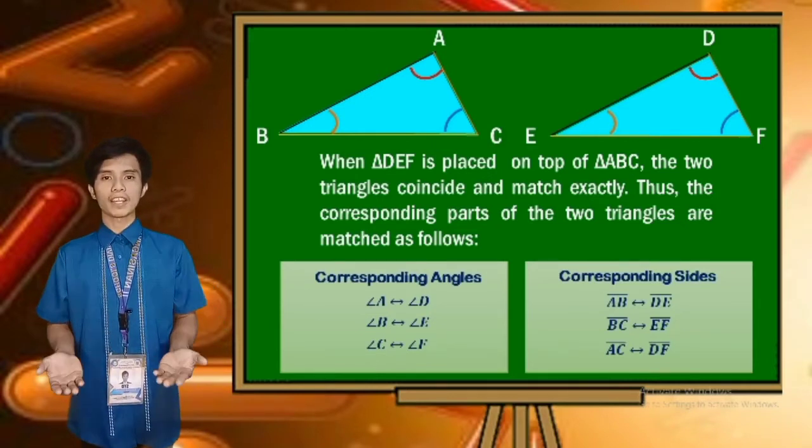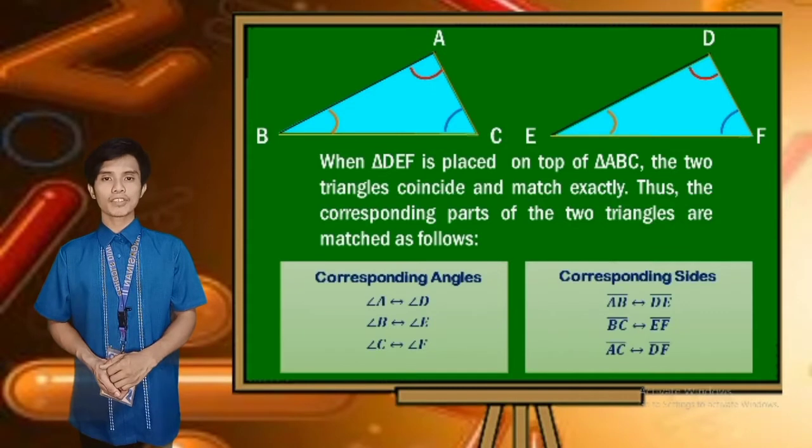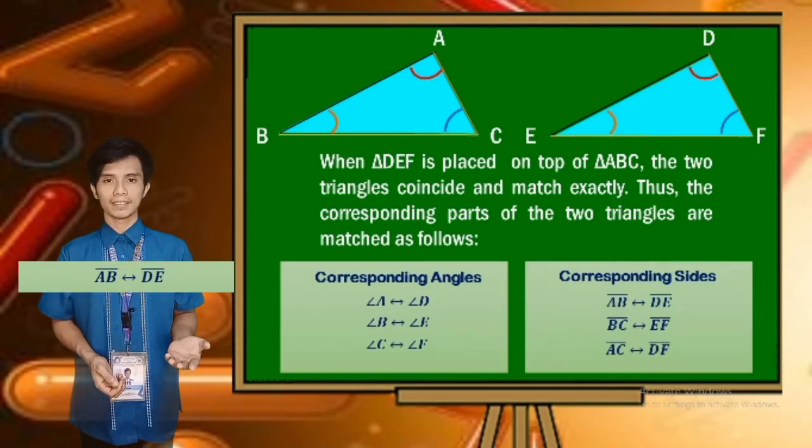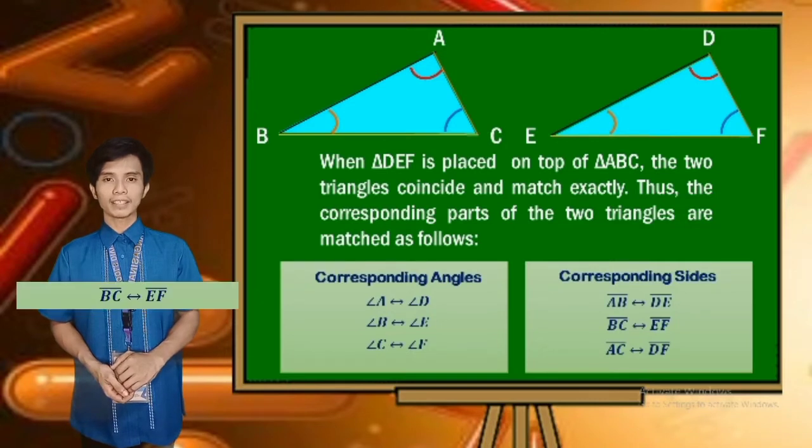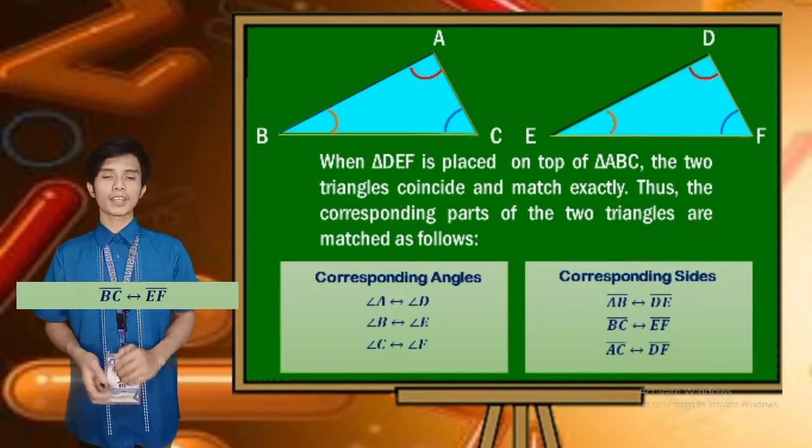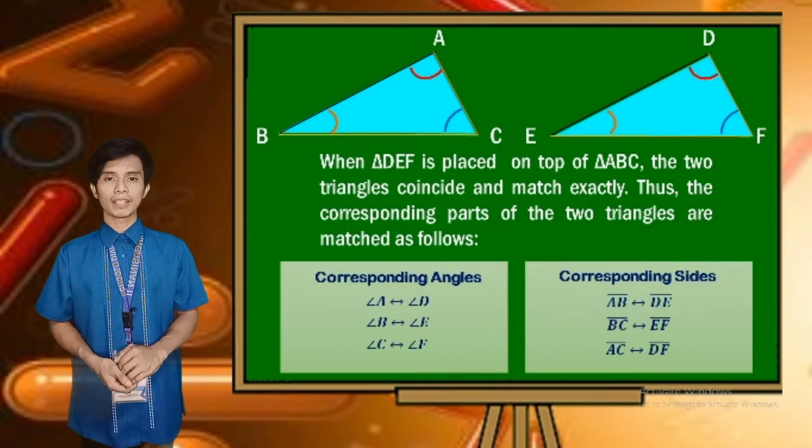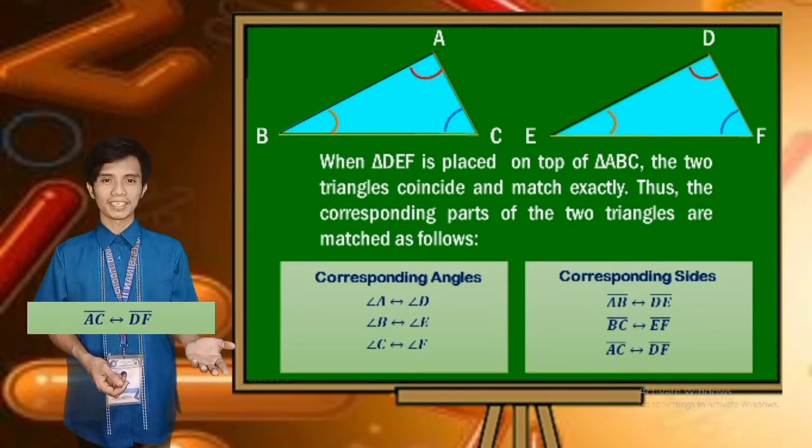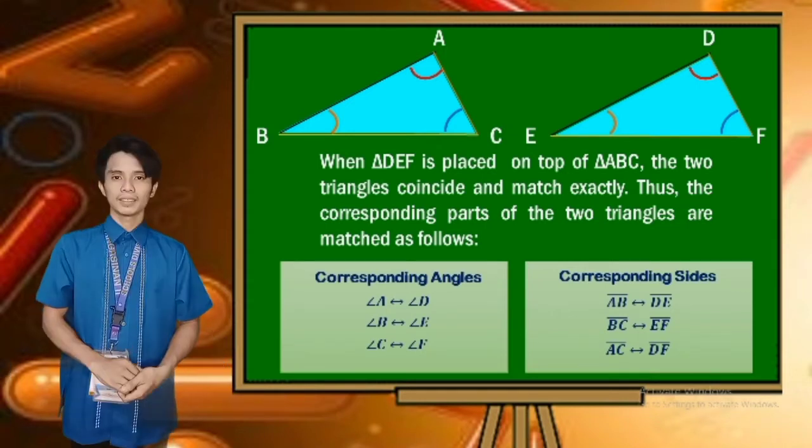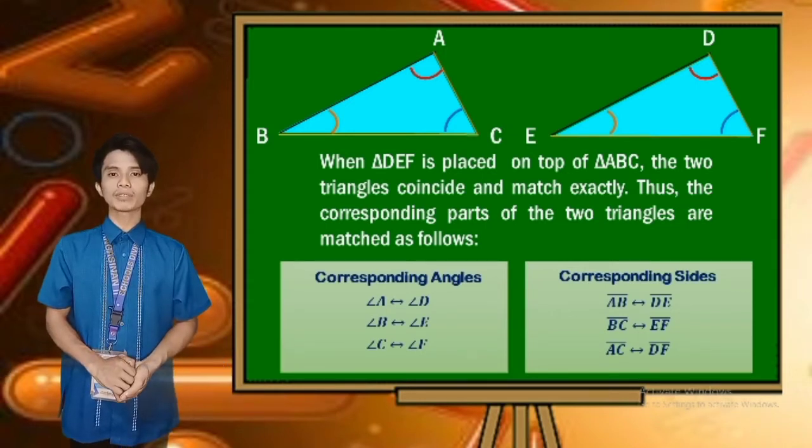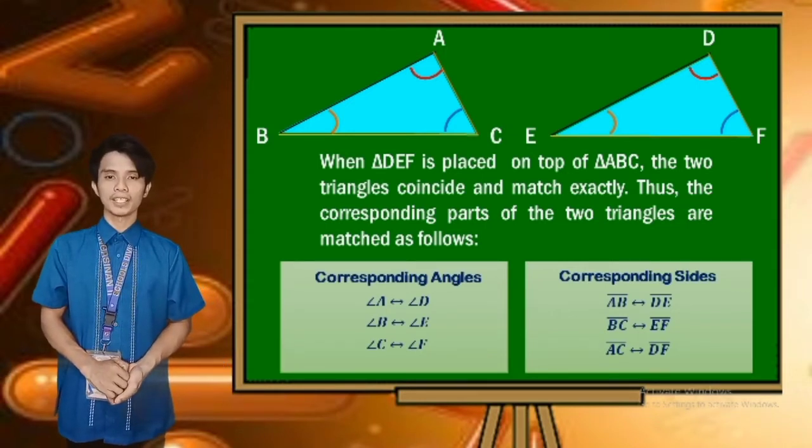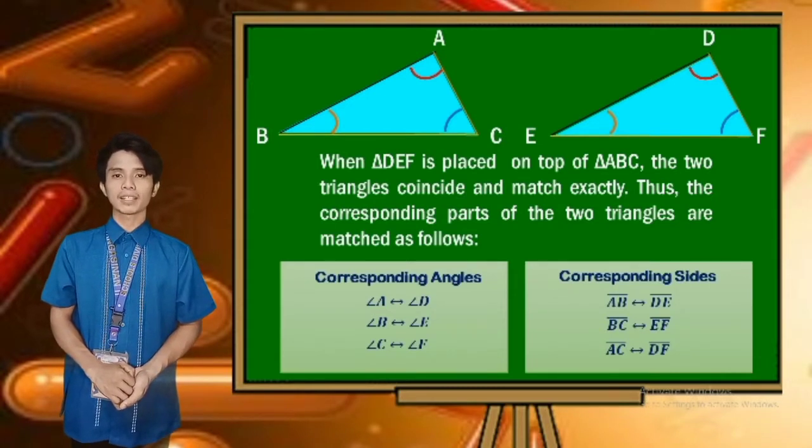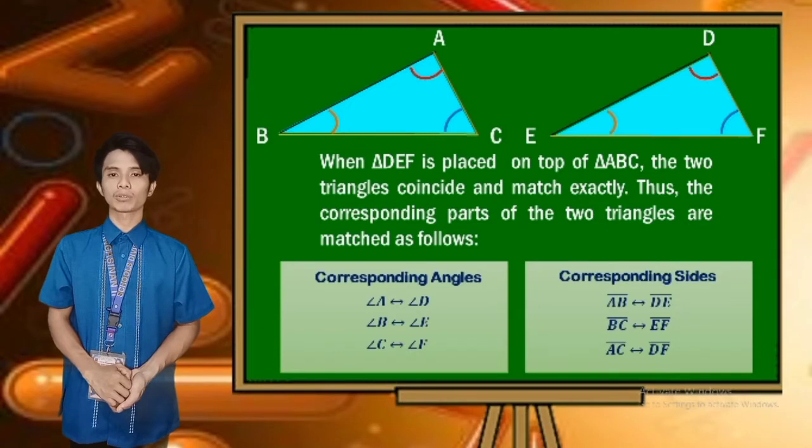And for the corresponding sides: Line segment AB corresponds to line segment DE, line segment BC corresponds to line segment EF, line segment AC corresponds to line segment DF. The corresponding parts of congruent triangles have the same measure. Therefore, the congruence statement is triangle ABC is congruent to triangle DEF.